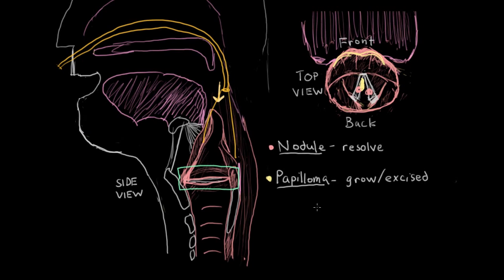Papillomas are generally caused by a virus called HPV — Human Papilloma Virus — which is transmitted through unprotected oral sex. These papillomas grow very quickly and can be very irritating because even when removed they can grow back. So the best way to get rid of papillomas is to never have them in the first place. Safe sex practices is the best way to avoid laryngeal papillomas.